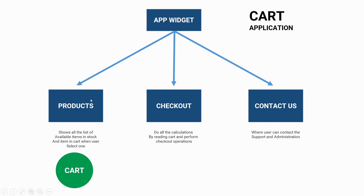Once he has done with the products — meaning once he has added all the items — he would navigate to the checkout screen where all the calculation would be performed by reading exactly the same cart in which the user has put all the products. But as this cart resides inside this product widget, the checkout widget needs to contact the product widget to get the cart, read all the products, and perform all the calculations. However, since they are siblings — their parent is the same app widget — in Flutter, siblings cannot communicate with each other and cannot exchange their state. And even if we manage to do it, we would be fighting with the framework, as it does not allow this.